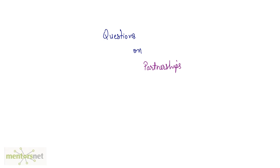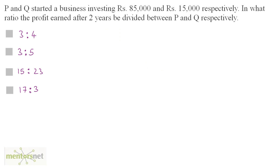Now it's time to solve some questions on partnerships. Here is our first question: P and Q started a business investing 85,000 rupees and 15,000 rupees respectively. In what ratio should the profit earned after two years be divided between P and Q respectively?